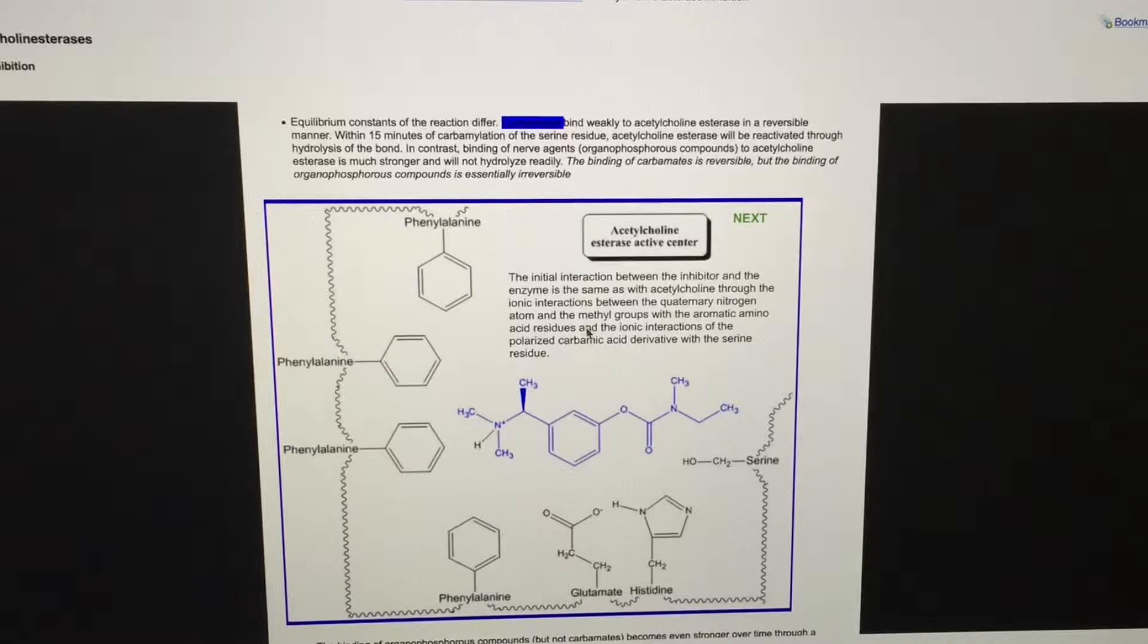This is similar to what occurred with acetylcholine in the prior video. Also note how the right side of the carbamate molecule contains a carbamate group, that is a carbon double covalently bound to an oxygen atom, and a quaternary nitrogen, that is a nitrogen atom with four covalent bonds.